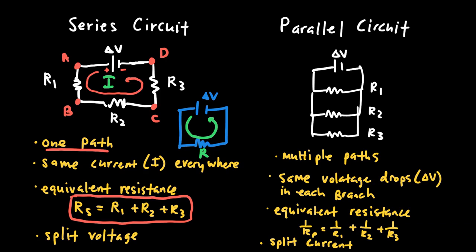Opposite to the parallel case, series circuits have the same current everywhere but split the voltage. For example, if the battery is 9 volts and each of three resistors has the same resistance, each resistor has a voltage drop of 3 volts. If one resistor has more resistance than the others it will have a larger voltage drop, and smaller resistors will have a smaller voltage drop. The voltage drops must all add up to the total battery voltage.